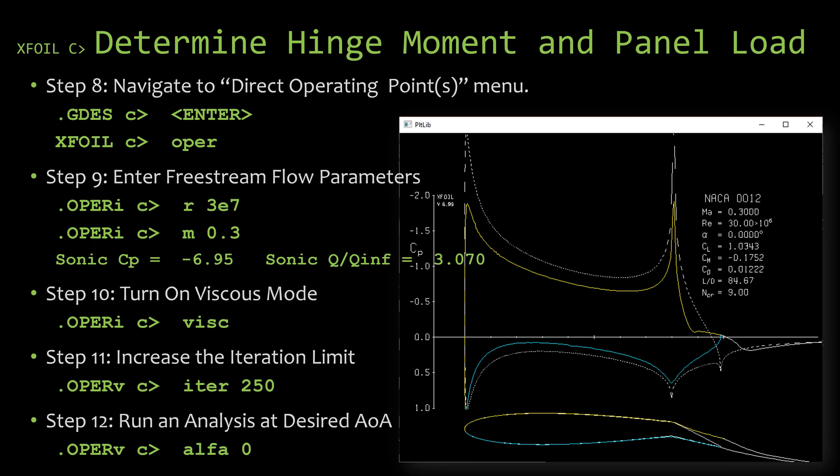While there, let's specify our flow parameters. I chose a Reynolds number of 3 times 10 to the 7th, and then I chose a Mach number of 0.3. Moving on to step 10, I turned on the viscous mode. In step 11, I increased the iteration limit. I highly recommend doing this step. The introduction of the flap is going to make it take a lot longer to converge.